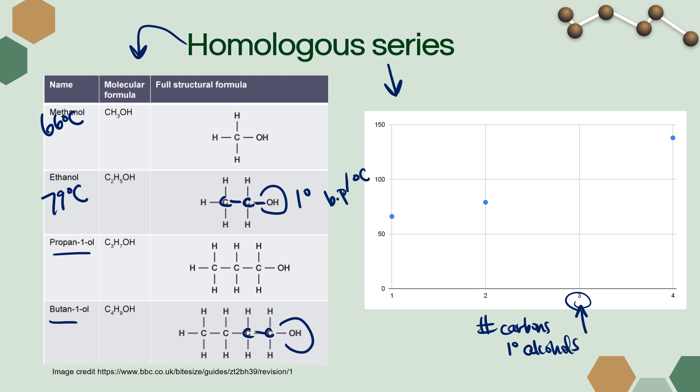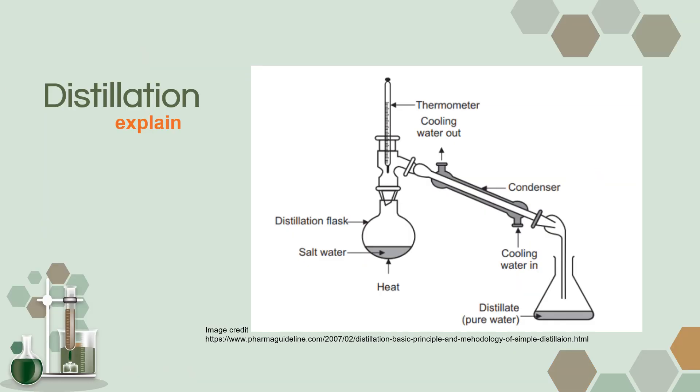The boiling point of methanol is 66 degrees Celsius, ethanol is 79 degrees Celsius, butan-1-ol is 138 degrees Celsius. So somewhere between these guys, we're guessing somewhere around 100. And in fact, the boiling point of propan-1-ol is 97 degrees Celsius—between 79 and 138, as predicted.